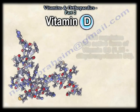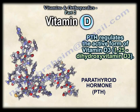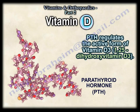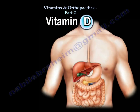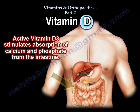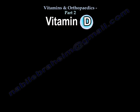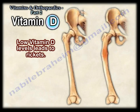PTH regulates this active form of vitamin D3. Active vitamin D3 stimulates absorption of calcium and phosphate from the intestine. Low vitamin D levels lead to rickets.